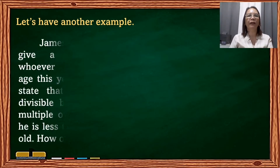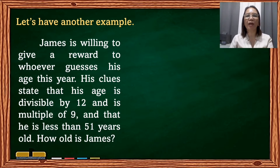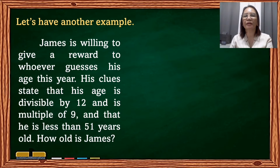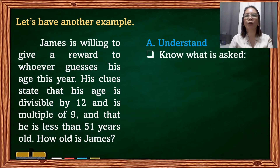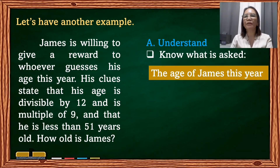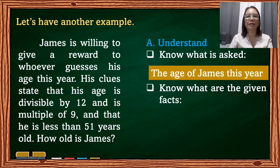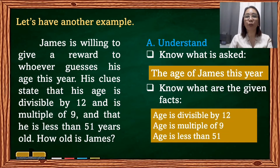Let's have another example. James is willing to give a reward to whoever guesses his age. His clues state that his age is divisible by 12, is a multiple of 9, and he is less than 51 years old. How old is James? Following Polya's steps, we first understand the problem. What is asked: the age of James this year. Given facts: age is divisible by 12, age is a multiple of 9, and age is less than 51.